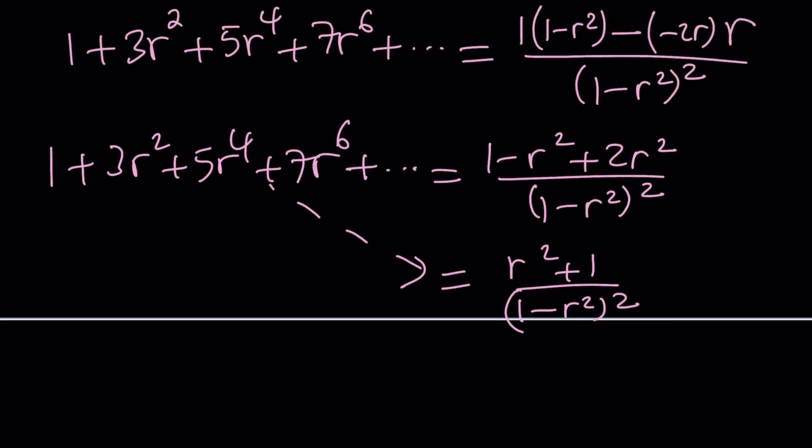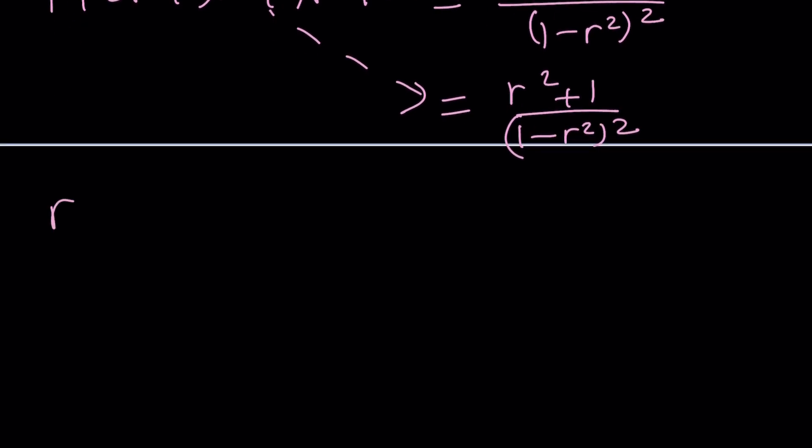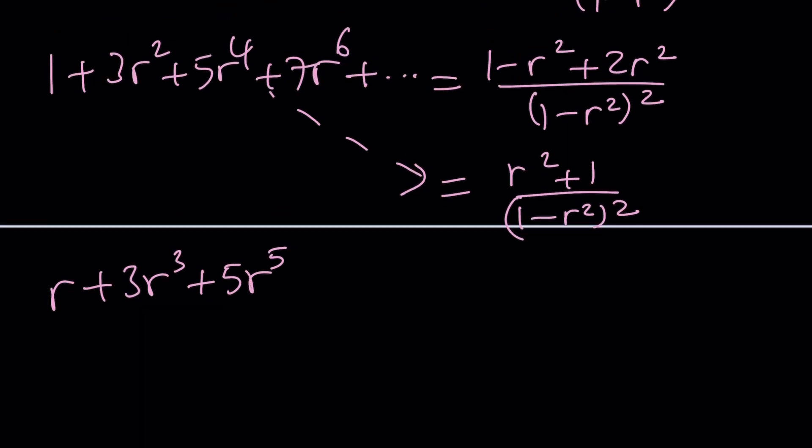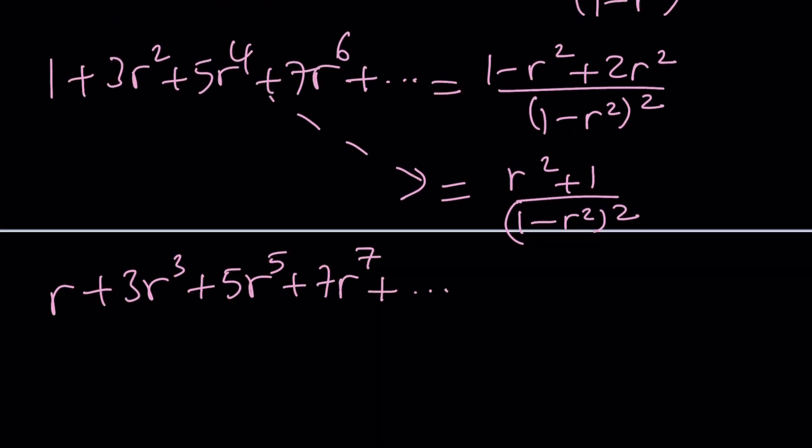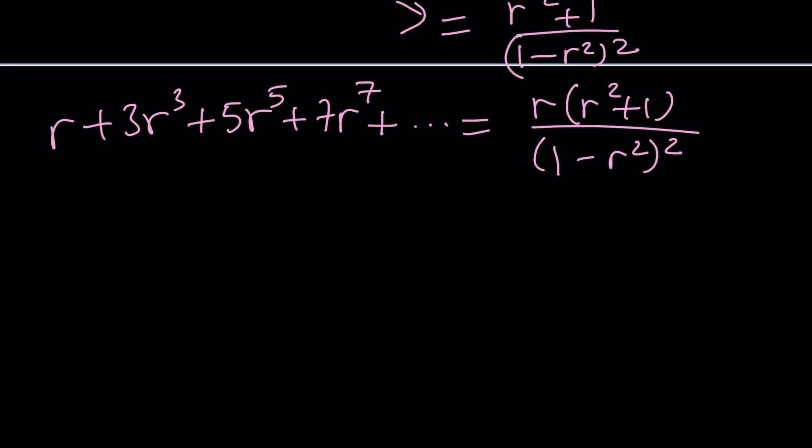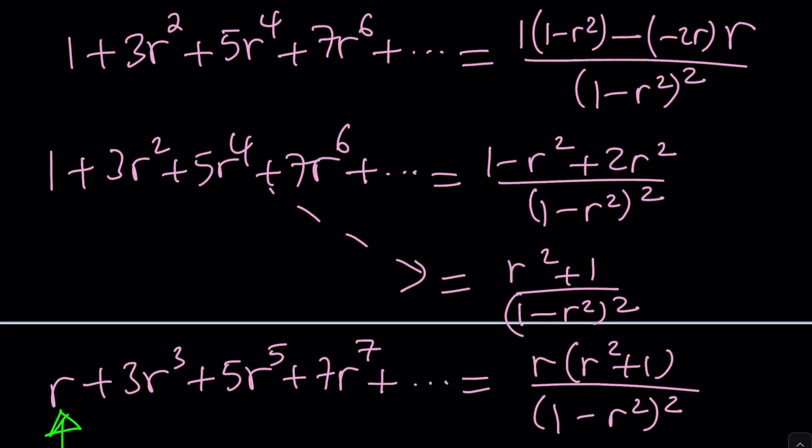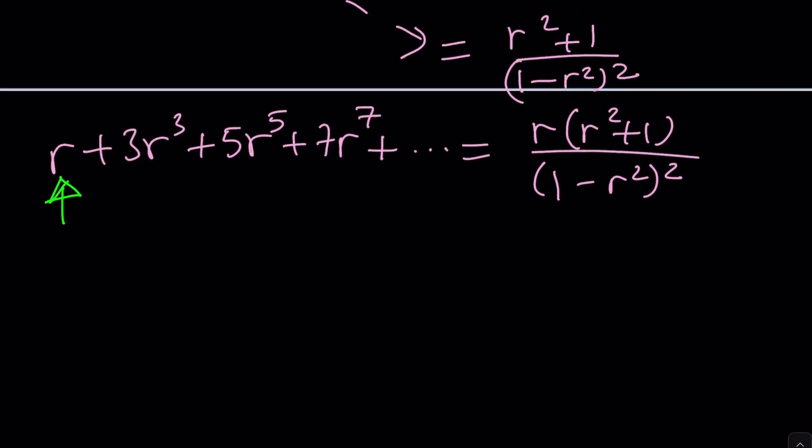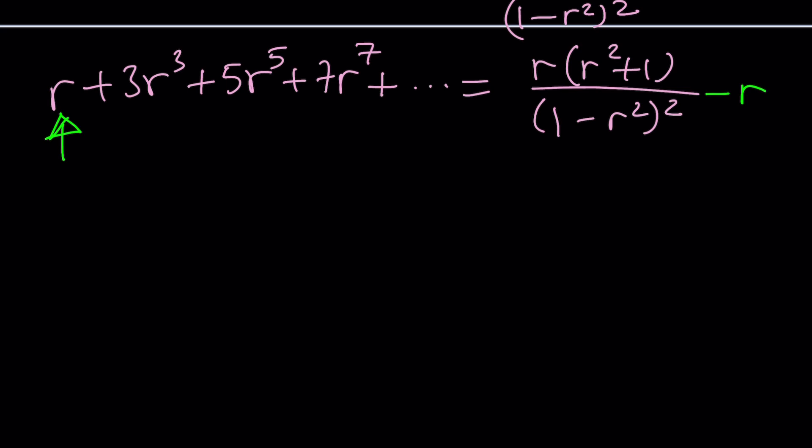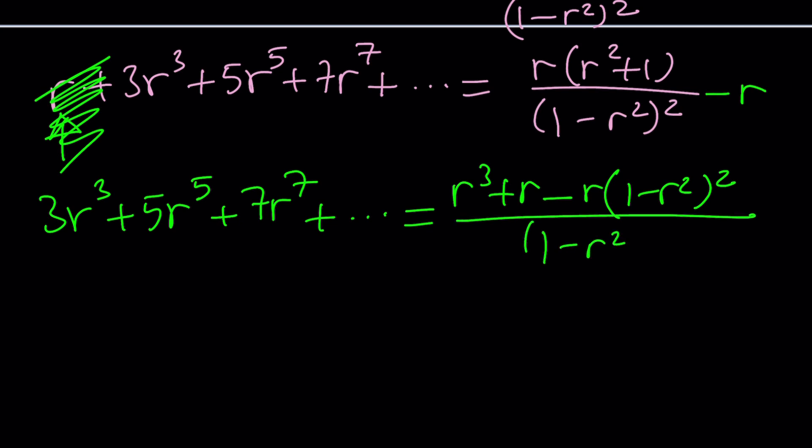Now here's the magic or mathemagic. We're going to multiply by r. Multiply both sides by r. You're going to get r plus 3r cubed plus 5r to the fifth and that's exactly what you need. And of course you have to do the same thing on both sides. Now we're very close. The reason why I say we are very close is because we don't have an r in our sum. Our sum started with 3r cubed. That's why I need to subtract r from both sides. And that's fairly easy to do. That's the sum you're looking for. So we need to simplify the right hand side. We have r cubed plus r minus r times 1 minus r squared squared all over 1 minus r squared squared. So that should give us the sum.